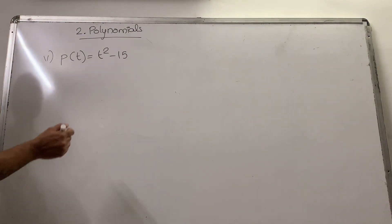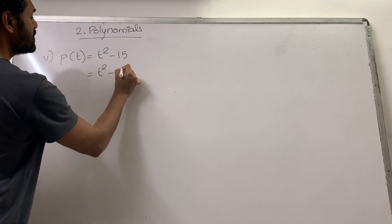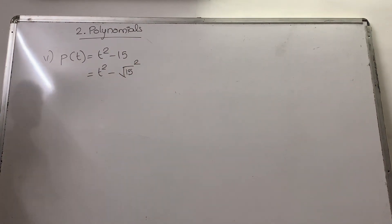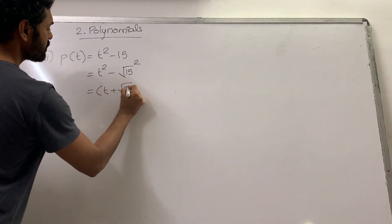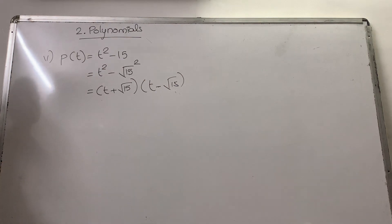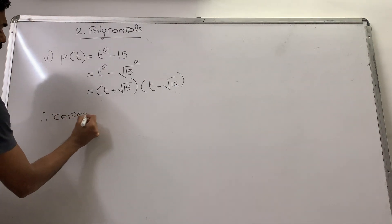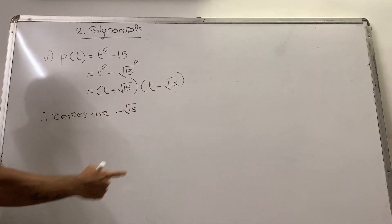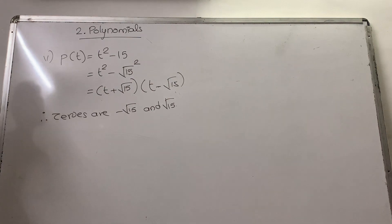You factorize such polynomials using the property of difference of squares. You have t², and write 15 as (√15)², so you have a² minus b². How do you factorize a² minus b²? You write it as (a + b)(a − b). So here the factors are (t + √15)(t − √15). Therefore, the zeros are: for (t + √15) = 0, the zero is −√15, and for (t − √15) = 0, the zero is +√15.